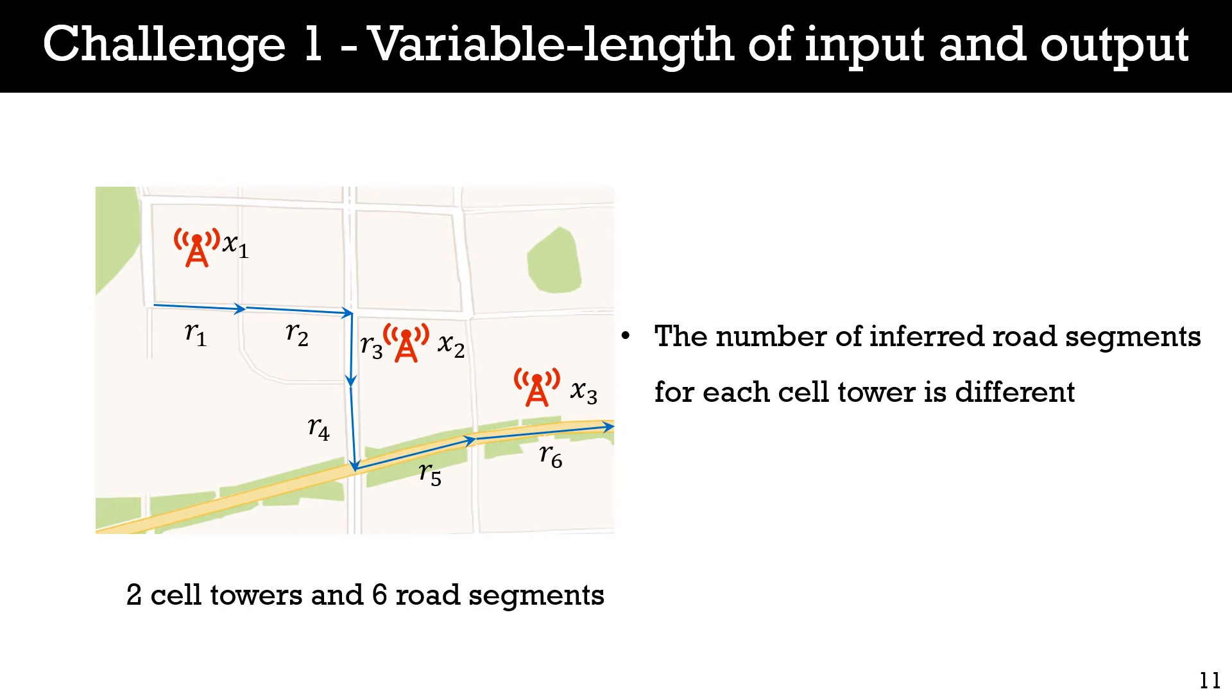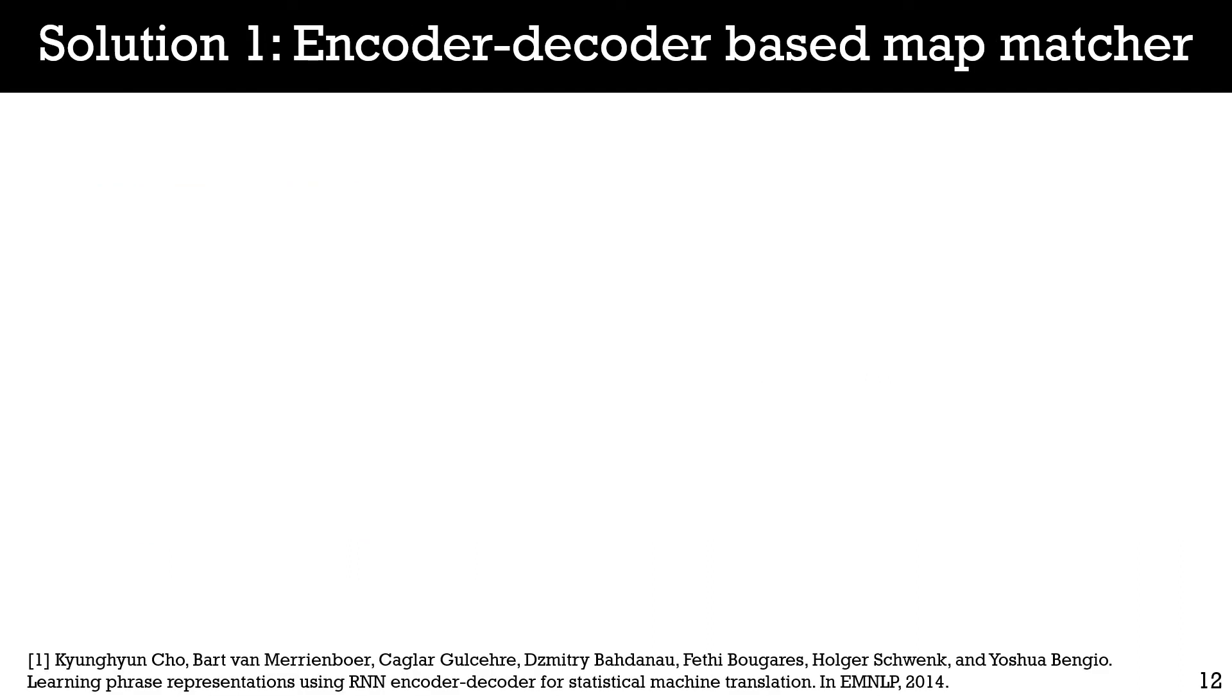Let's start with the first challenge. As we can see, because of the large coverage of cell towers, different cell towers may cover different numbers of road segments. However, basic recurrent neural networks can only handle the mapping between fixed-length input and output. Given different numbers of cell towers in a location sequence, how to generate the sequence of roads with different lengths needs to be explored.